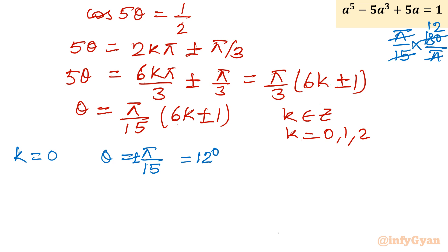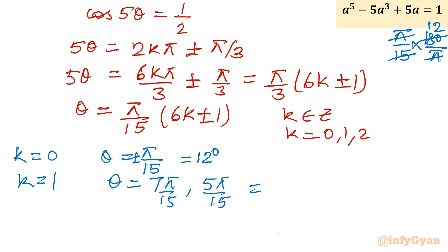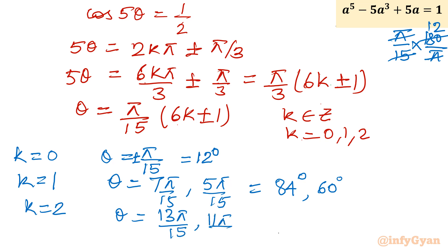For k = 1: θ = (π/15)(6 ± 1), giving 7π/15 or 5π/15. So the angles are 7π/15 = 84° and 5π/15 = π/3 = 60°. For k = 2: θ = (π/15)(12 ± 1), giving 13π/15 or 11π/15. These correspond to 156° and 132°. So our five angles are 12°, 60°, 84°, 132°, and 156°.